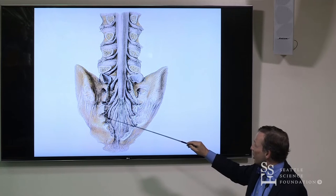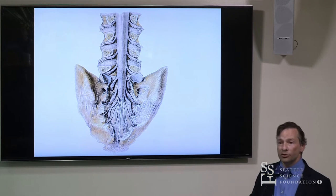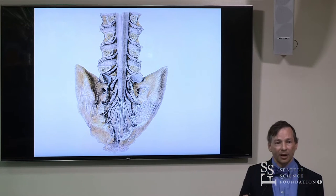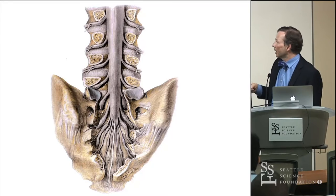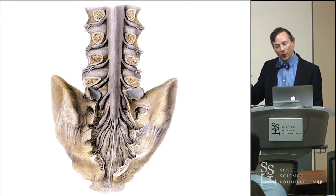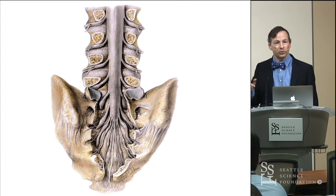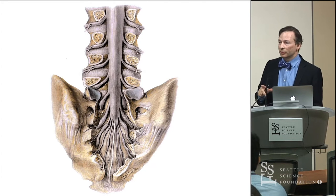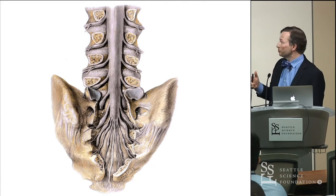Versus the ventral rami entering the ventral foramina of the sacrum, which are much larger. As we said earlier, they're going out to contribute primarily to the sciatic nerve, but also to larger nerves, for example the pudendal nerve.